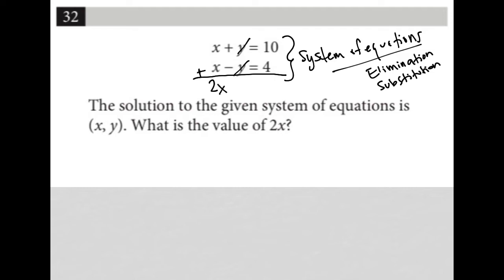2x plus x is 2x, but y plus negative y is gone, and then 10 plus 4 equals 14. Therefore, when I divide both sides by 2, x equals 7.